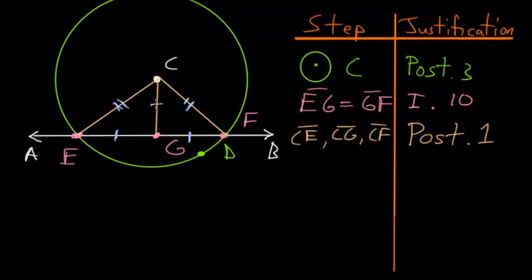And then each of these triangles shares this third side here. So by book one proposition number eight, or essentially the side-side-side theorem, we know that these two triangles are exactly equal to each other. And since the triangles are equal to each other, we know that the angles within the triangles are equal as well. So more specifically, this angle here EGC is equal to this angle here FGC.